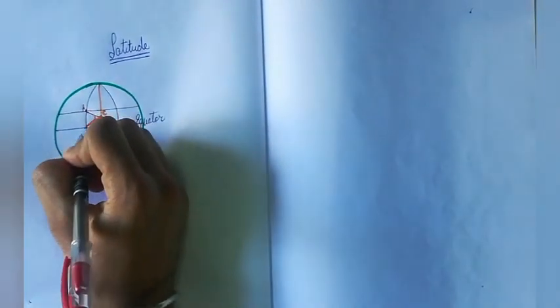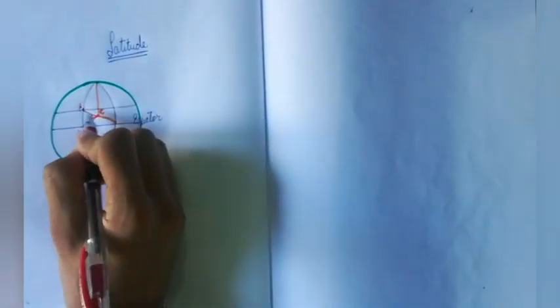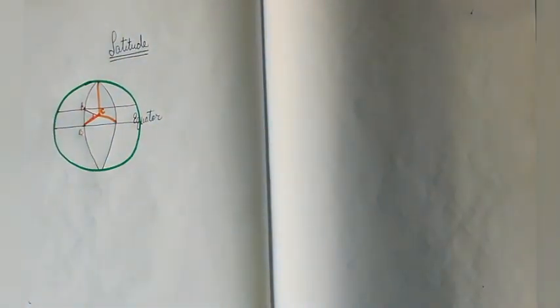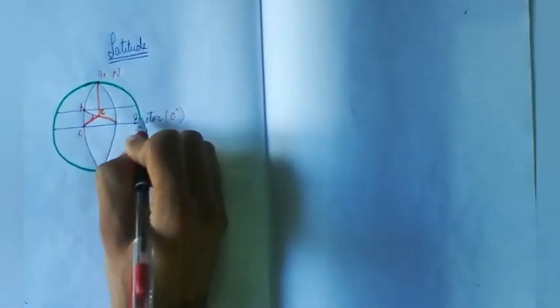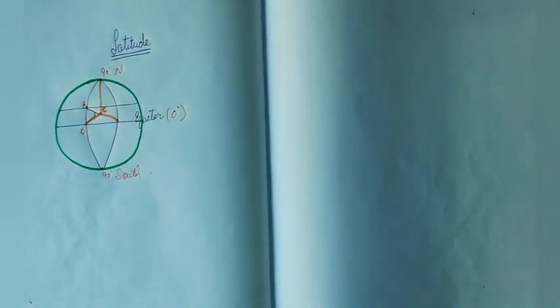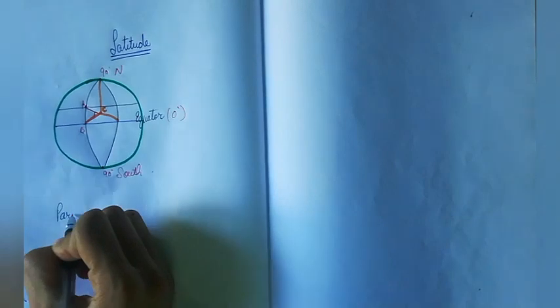This is point A, this is point B, so angle A-C-B gives you the latitude. Latitude is measured in degrees from 0° at the equator up to 90° north and 90° south. On the Earth, we designate lines of equal latitude as parallels. We will see what parallels are in the next topic — parallel lines of latitude.